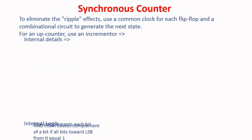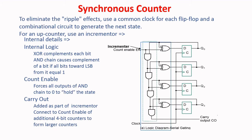Synchronous Counters: the logic diagram of synchronous counters using flip-flops is given above. To eliminate the ripple effects, use a common clock for each flip-flop and a combinational circuit to generate the next state. For an up-counter, use an incrementer. Internal details of the circuit diagram — XOR complements each bit, and the chain causes complement of a bit if all bits toward LSB from that bit are equal to 1.